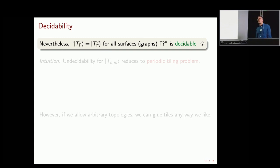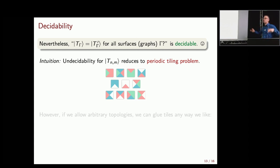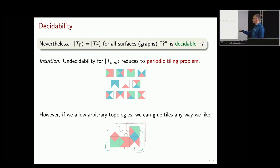An intuition for why rectangular grids give undecidability: it's related to the problem of periodically tiling a plane with tiles. One can convert such a tile set into a PEPS tensor, and that's undecidable. You can encode computation in one direction, and there's some computation looping. But when we allow arbitrary connections, there's no direction of computation — you have much more freedom. For example, this is a tile set for which it's known you cannot periodically tile a plane, but here I'm tiling it in a funny way with non-standard boundary conditions, effectively placing it on a higher-genus surface.